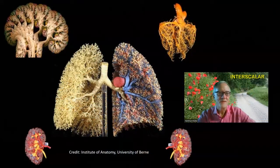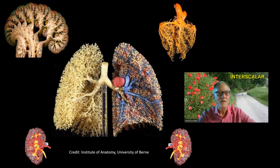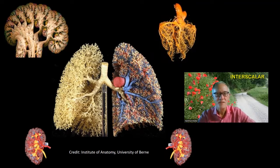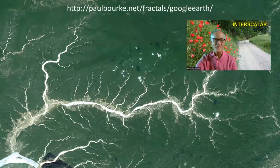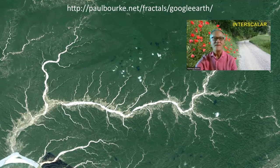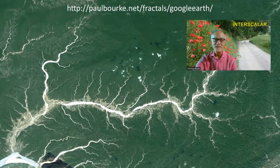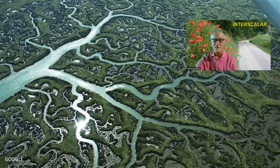Our organs embed fractal structures, as we can see in the median section of the brain, the vascular distribution of the heart and the kidneys, and of course the pulmonary tree. Even a flash is fractal. This is not a flash, but a Google satellite photo of a river. Under the microscope, we can discover the fractal structure of a leaf with the primary and secondary rib. This is not a leaf, but a river in Spain.